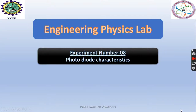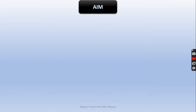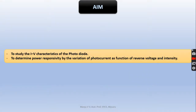Experiment number 8: photodiode characteristics. The aim of the experiment is to study the IV characteristics of the photodiode, to determine power responsivity by the variation of photocurrent as a function of reverse voltage and intensity.